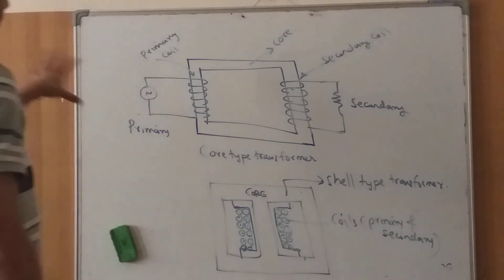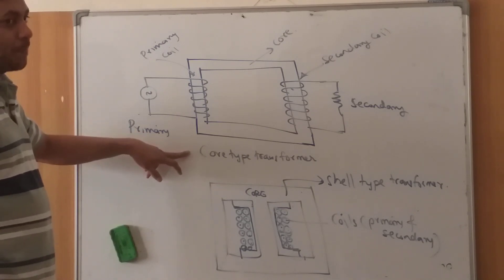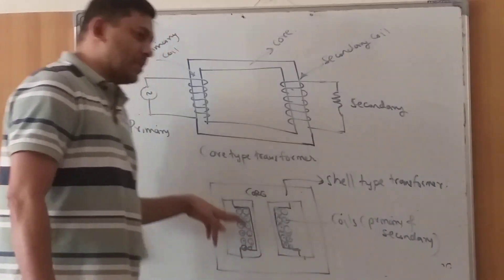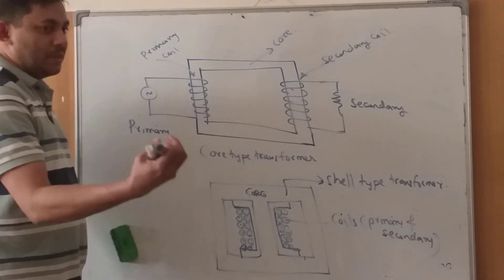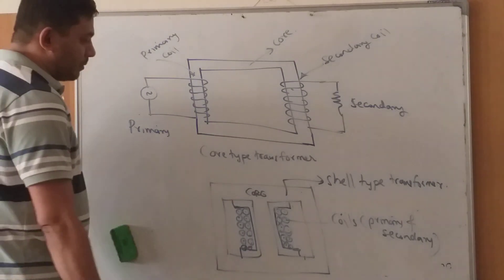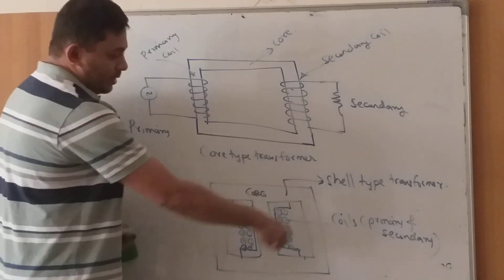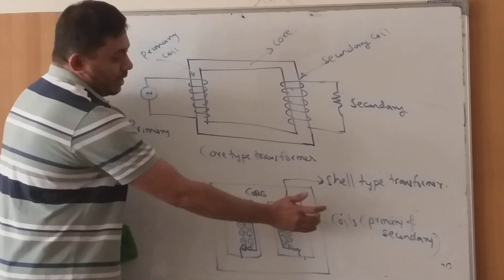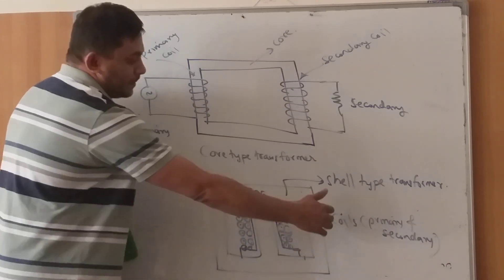Here we can see two types of transformers. The first model is the core type transformer; the second model is the shell type transformer. For low voltage step-down transformers used in household equipment, we normally go for the shell type transformer. In the shell type, the coil is located inside an inner limb — you can only see or catch the outer part of the core, while the coil is inside.